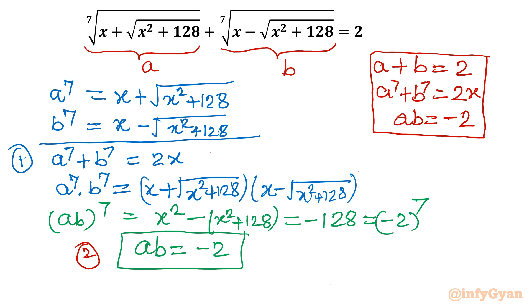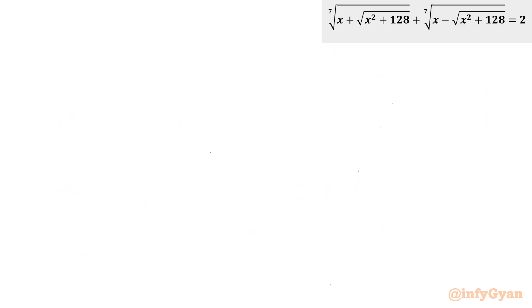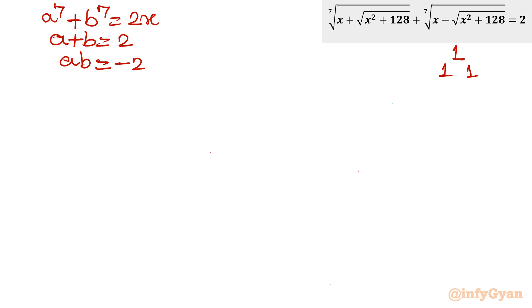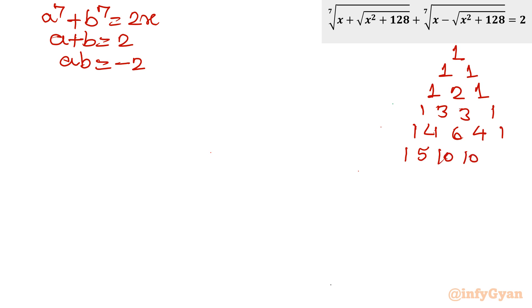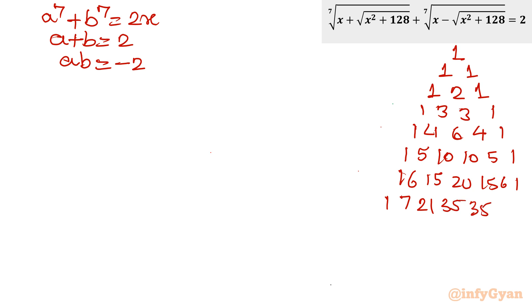Now let us write Pascal's triangle, because we need to find A⁷ + B⁷. The rows are: power 2: 1, 2, 1; power 3: 1, 3, 3, 1; power 4: 1, 4, 6, 4, 1; power 5: 1, 5, 10, 10, 5, 1; power 6: 1, 6, 15, 20, 15, 6, 1; and power 7: 1, 7, 21, 35, 35, 21, 7, 1. We will be using the coefficients for power 5 and power 7.